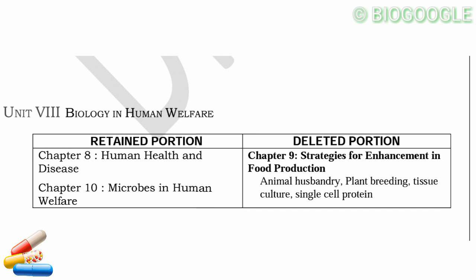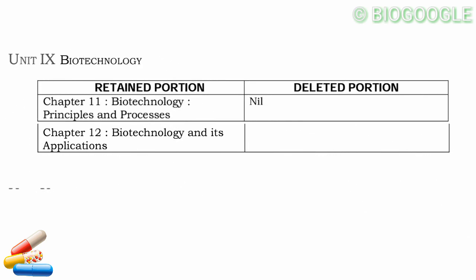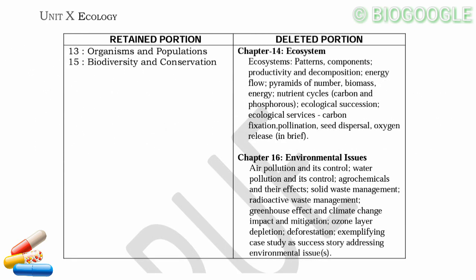Biology and Human Welfare: Human Health and Diseases — no change. Chapter 9, Strategies for Enhancement in Food Production — that chapter is completely deleted, including animal husbandry, plant breeding, tissue culture, and single-cell protein. Next unit is Biotechnology — complete unit retained. Ecology has 4 chapters: Organisms and Population as is; Biodiversity and Conservation as is; Ecology and Environmental Issues are complete.